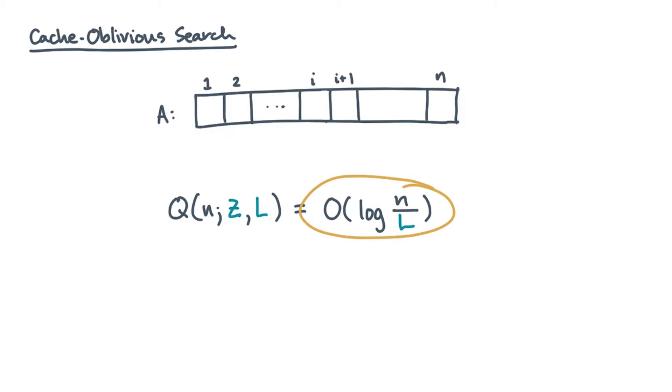Big O of log n over l. Compare this to the lower bound. Binary search differs from the lower bound by about a factor of log l. So it's not optimal, but one nice thing about binary search is that it's already cache oblivious. It makes no references to the cache size z or the line size l. But it begs the question, how do we get to the lower bound?